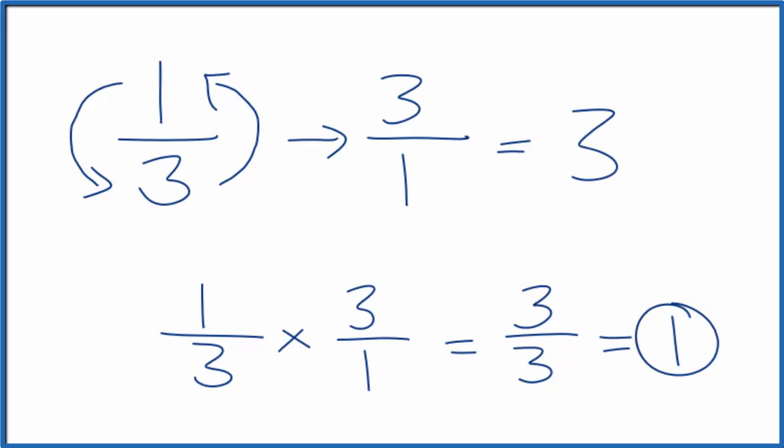So we did this correctly. The reciprocal for 1 third is 3 over 1, or you could just call it 3. This is Dr. B, and thanks for watching.